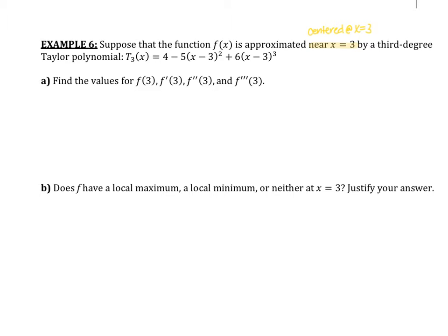So what I'm going to do is first rewrite this Taylor polynomial a little bit differently. My Taylor polynomial for a third degree should be f of three, centered at three by the way, plus f prime of three times x minus three, plus f double prime evaluated at three over two factorial times x minus three squared, plus f triple prime evaluated at three over three factorial times x minus three cubed.